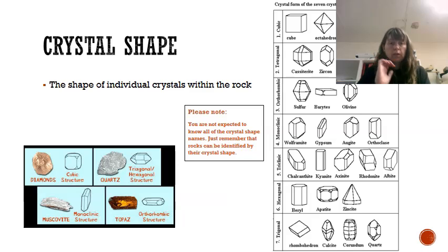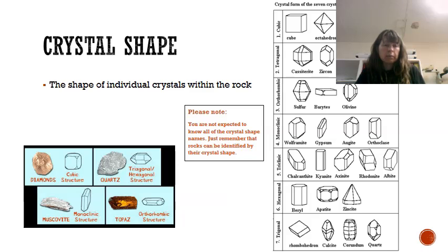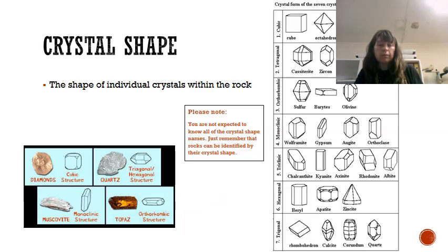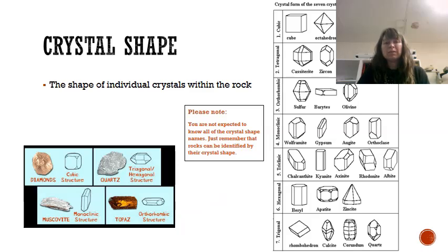Crystal shape can also give us a really good idea of which rock we're talking about. When we go to the museum, you'll see lots of different shapes and sizes of rocks. These shapes are formed by their natural lines of cleavage in nature — they're not formed by a jeweller. Although a diamond might be cut into one of these shapes, we're talking about its natural state. You're not expected to know all the names of the shapes, just know they come in lots of different types and it's quite useful for identifying the rock.